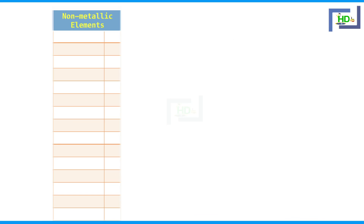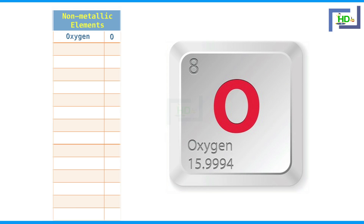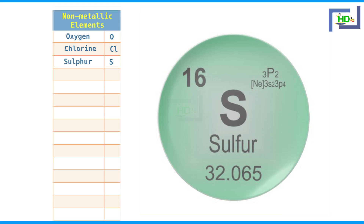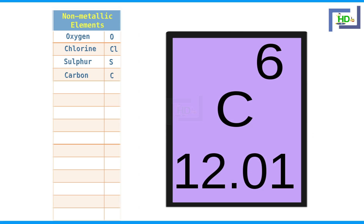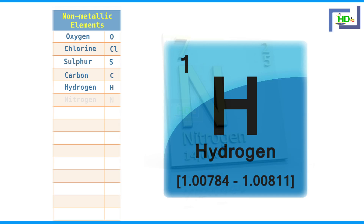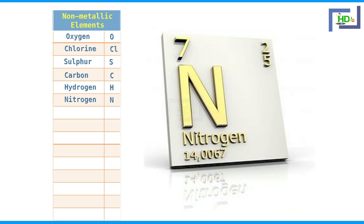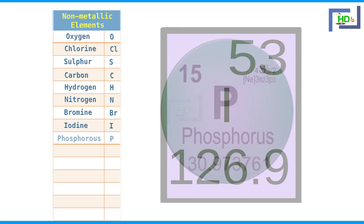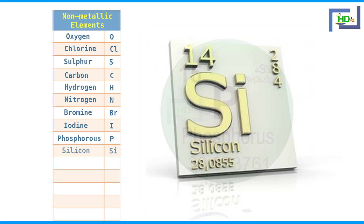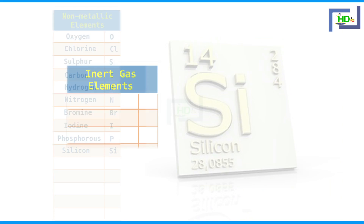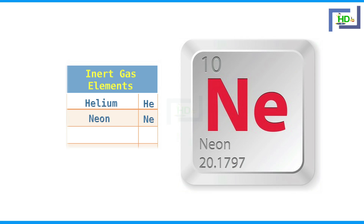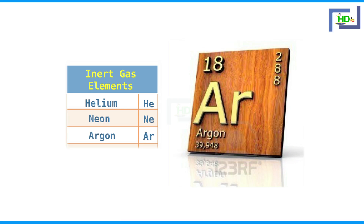For non-metallic elements: oxygen O, chlorine Cl, sulphur S, carbon C, hydrogen H, nitrogen N, bromine Br, iodine I, phosphorus P, silicon Si. And the inert gas elements: helium He, neon Ne, argon Ar.